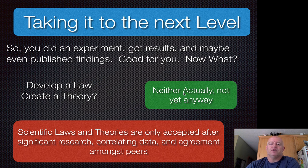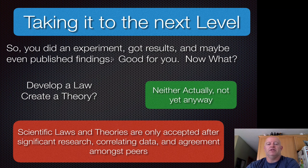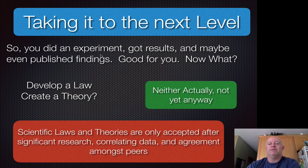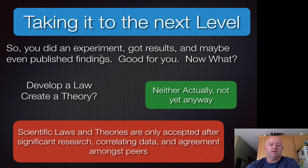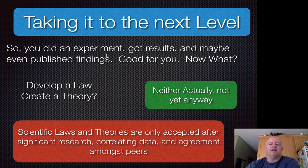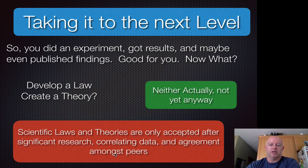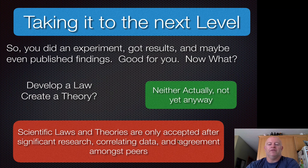However, if you were to do an experiment and then you redid that experiment four or five different ways, and you had a colleague from California or Cambridge or someplace else and they mimicked your experiment and they're getting the exact same results, and maybe you took your results and compared them against other people's findings, as a result of doing a lot of work, significant research, correlating data, and agreement amongst peers—that is when we start to develop this idea of theories and laws.